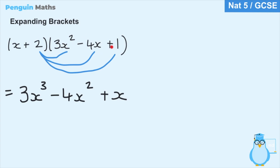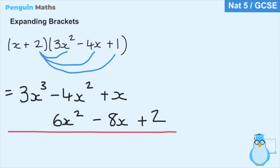Now we multiply everything in the second bracket by 2: 2 times 3x squared is 6x squared, 2 times minus 4x is minus 8x, and 2 times 1 is 2. That gives us six terms in total from the six multiplications. Notice how I've laid out the terms — x cubes grouped together, x squareds together, x's together, and constants together. This makes it easy to group and simplify terms with the same power.